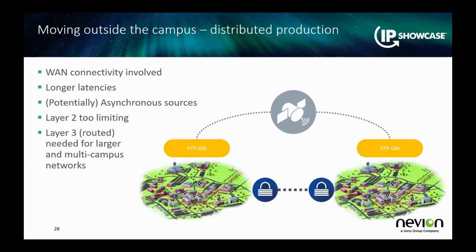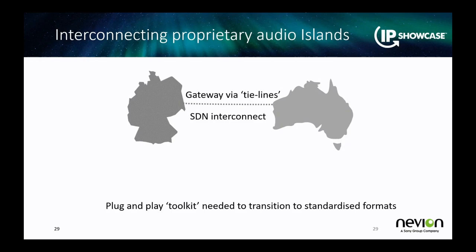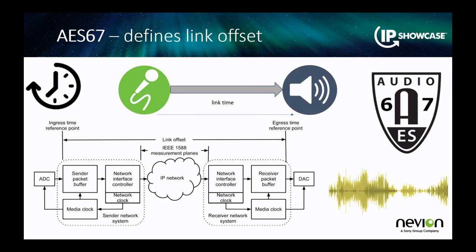Moving outside the campus with WAN connectivity: most earlier audio production environments were campus-based, even subnet-based, working in effectively a layer-two environment. But once you start expanding and doing distributed production, you need more flexibility in the way audio works. One of the solutions that happens a lot is effectively tie lines between layer-two audio environments in different geographical locations or different zones within a production environment.